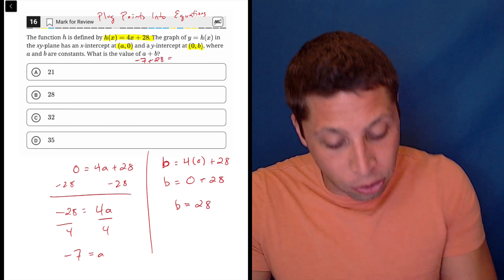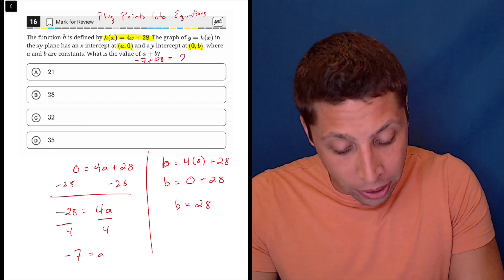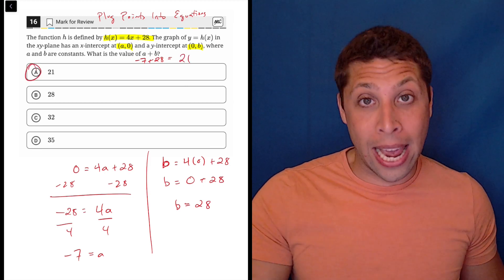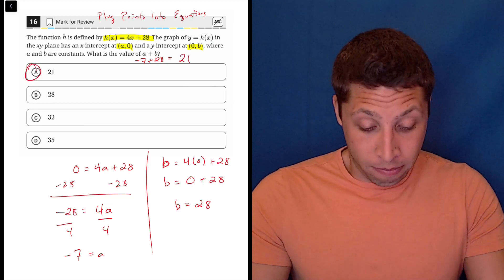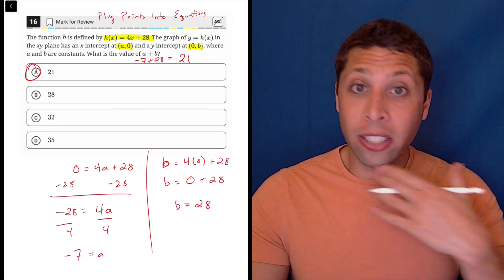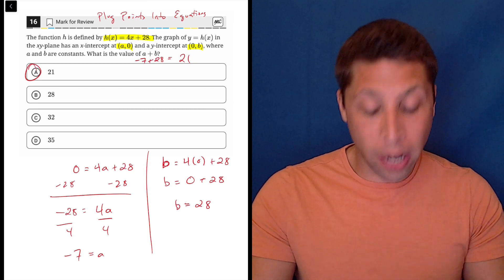And now I can just add those two numbers. Negative 7 plus 28 is 21, choice A. That's it. So look, you got to do some algebra, but this is still a good example of something that you should be training yourself for,